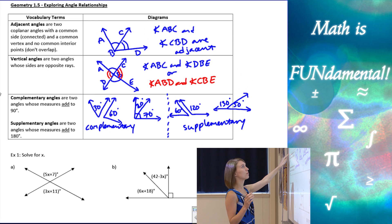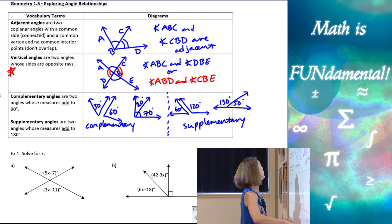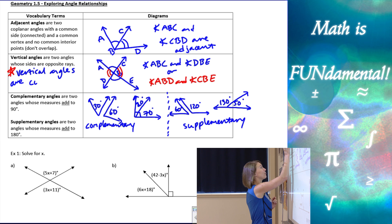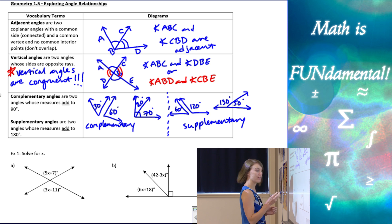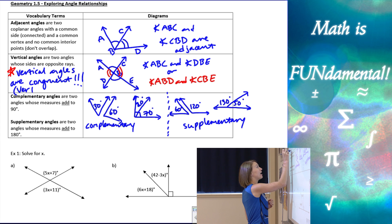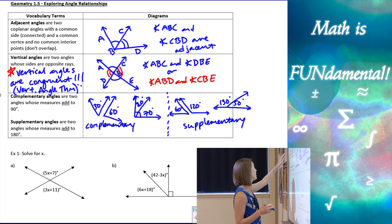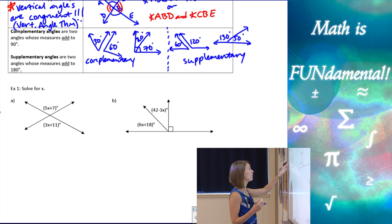One really important point we need to go back and add to our vocabulary — let's put a big star so we remember it. Vertical angles are always congruent! We call this the vertical angle theorem, abbreviated as vertical angle THM. So we can use that rule — that theorem — to solve our first example.